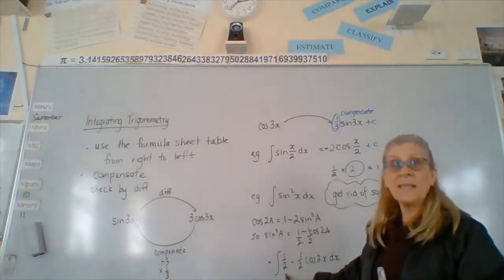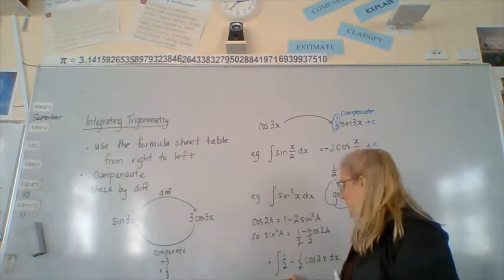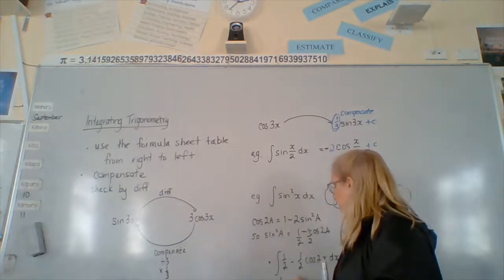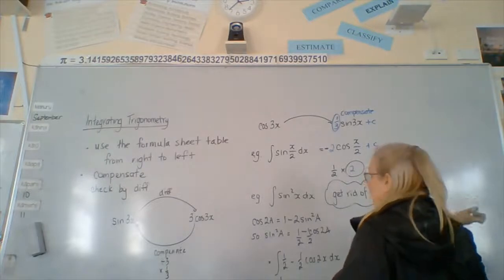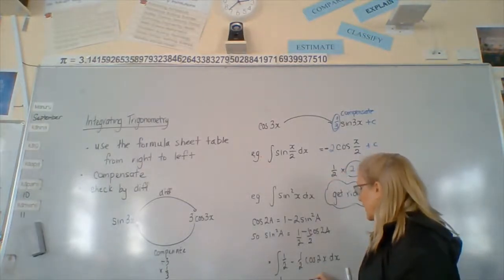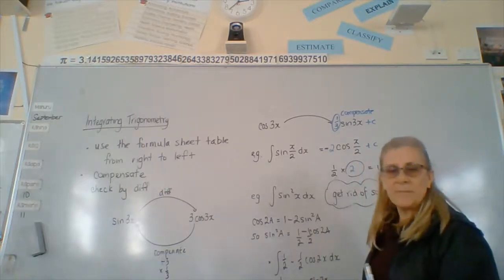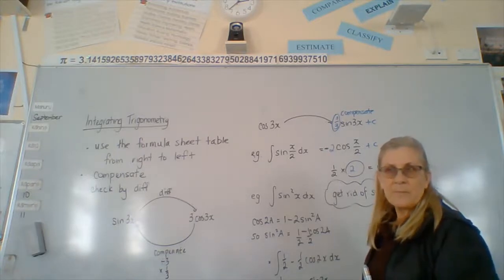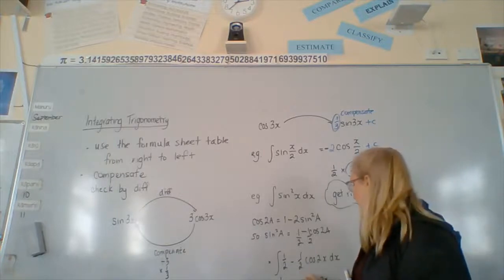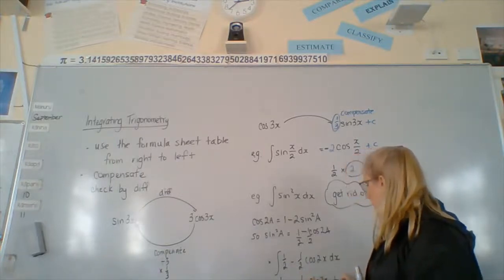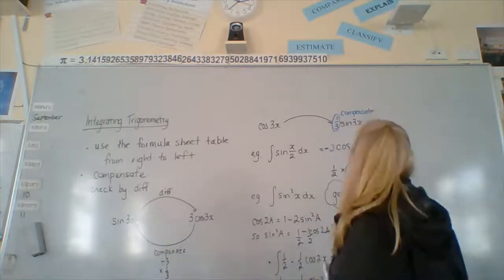So, this one's easy. Integrating a number, what do we do? An x. So, we can write x over 2, or we can write a half x. Both would be marked as right. This one, not so easy. We're looking on this side. Cosine goes to sine. So, we know what we're going to get here is a sine 2x. Our compensation for that 2 is? A half. We've already got a half that makes a quarter, and it's positive. So, that's a trickier one. One more trickier one.